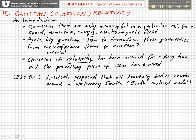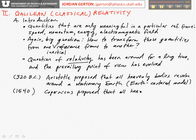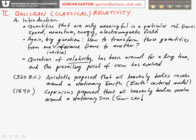Then much later — almost 2,000 years later — in 1540, Copernicus proposed that all heavenly bodies revolve around the stationary sun. This is the sun-centered model. Now, this is much simpler. The earth-centered model is complicated because it's further from the truth, and so to make it work you have to make all kinds of interesting and unusual assumptions.